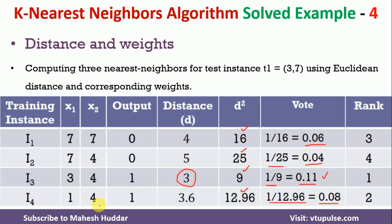We check the majority vote based on these ranks for K=3. The first, second, and third nearest neighbors are identified. Class 1 appears the maximum number of times, so we classify the new instance again as class 1. I hope you understood how to apply the K-nearest neighbor algorithm as well as the weighted K-nearest neighbor algorithm to classify a new instance. If you like the video, please like and share, subscribe for more videos, and press the bell icon for regular updates. Thank you for watching.